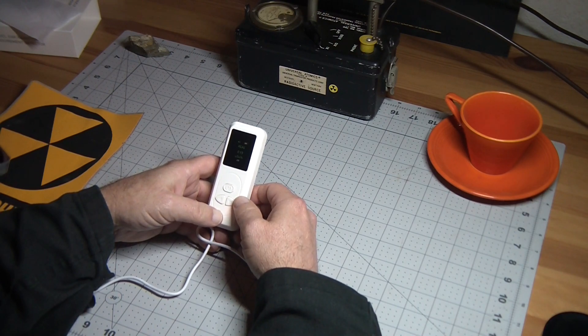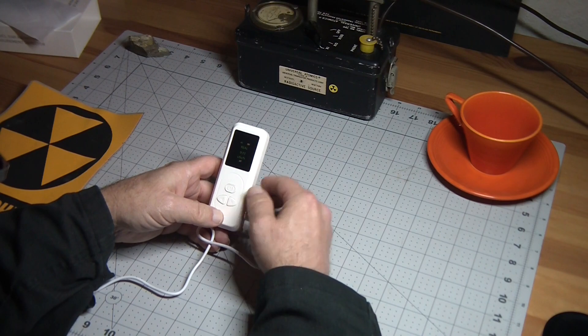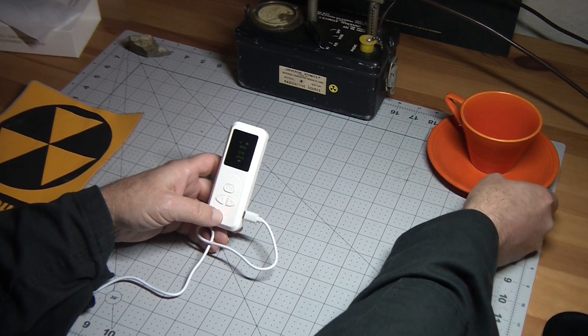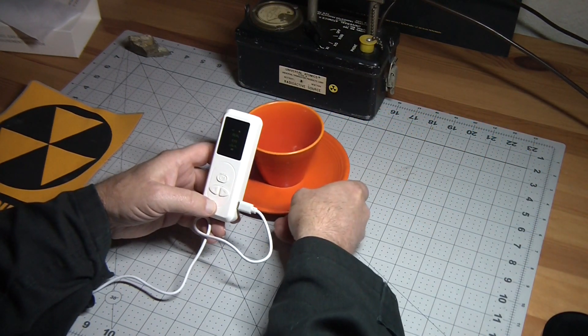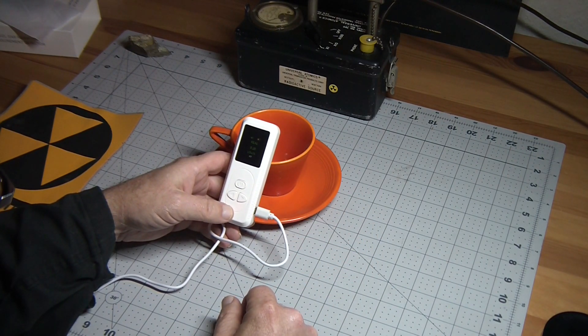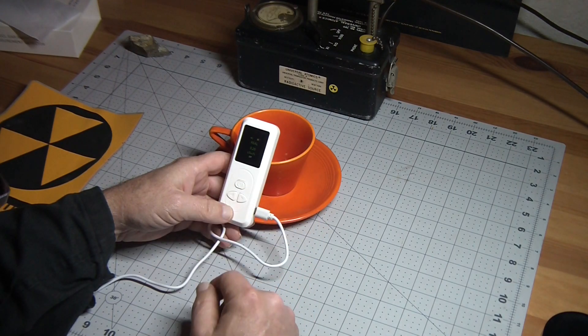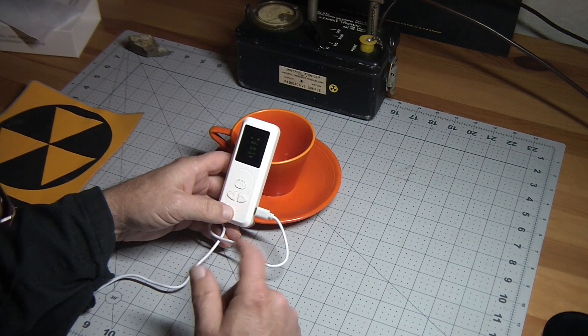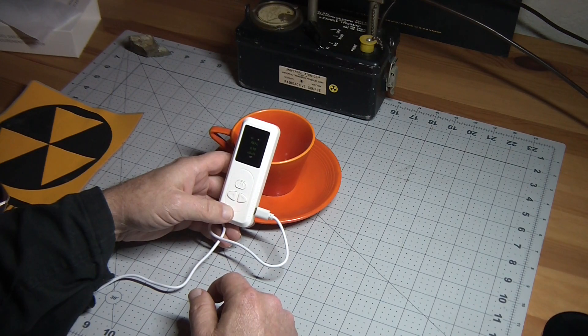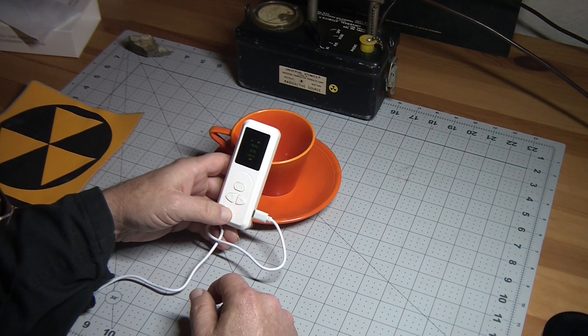Much more significant problem with these is they do not actually detect radiation at all. Let's try with my Harlequin cup and saucer. As we bring it closer, I do not hear any clicks. The number is not increasing. Perhaps a little bit. But we are going to see later why it is not actually reacting to this. This is quite highly radioactive.